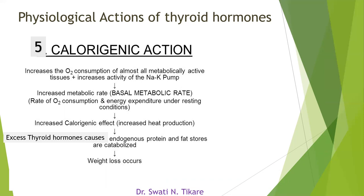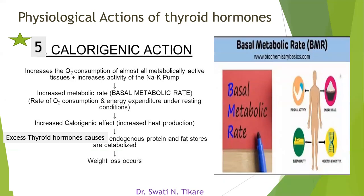The most important action of the thyroid hormone is the calorigenic action. It increases oxygen consumption of almost all metabolically active tissues by increasing the sodium-potassium ATPase pump, which is a primary active transport requiring energy. When activated, it causes increased oxygen consumption in each cell. This is a very important action, marked with a star.